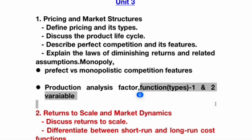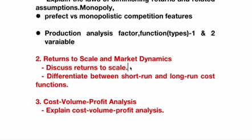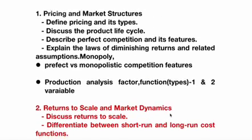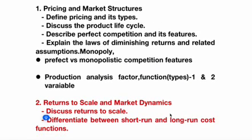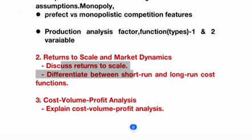Also in Unit 3: production analysis — factor functions and their types with one and two variables — is set as a long question. Discuss returns to scale is a short question. The differences between the short-run and long-run cost functions are set as a long question, and cost-volume-profit analysis may also be short as well as long. If you want to score 12 out of 12 you need to be thorough. When a question is 2A/B or 3A/B, you must attempt either 2A/B 100% or 3A/B 100% — do not write only 2A or only 3B as that wastes time and limits your marks.